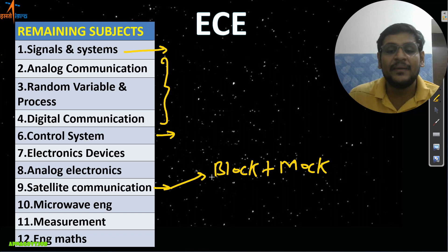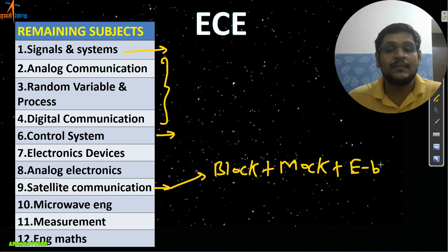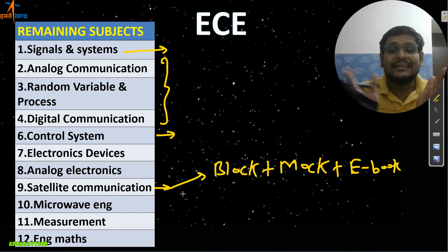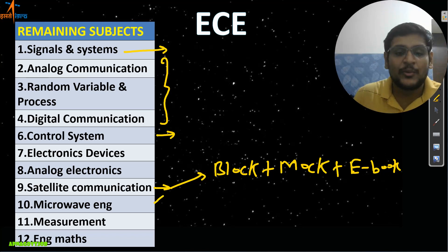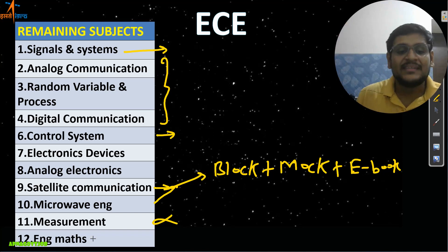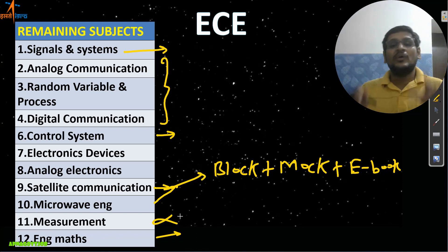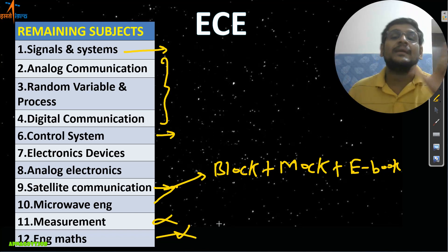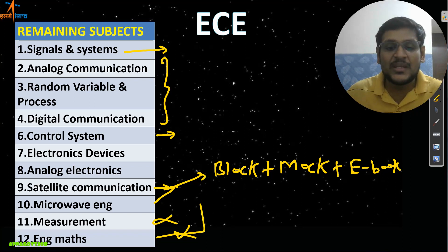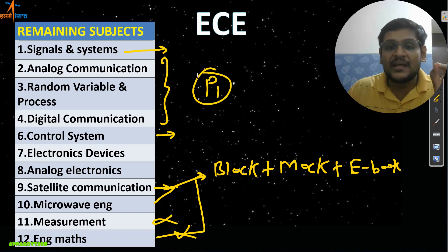For Satcom — if you have your B.Tech books you can use them, or use this shortcut: whatever questions I add in your blog plus mock tests, only do those concepts, and combine that with the basic concepts in your quick revision eBook about Satcom. No need to refer to full notes or full subject coverage since time is less. Same approach for Microwave. Skip Measurement completely. For Engineering Mathematics — if you are comfortable with matrices and calculus from B.Tech, go ahead; otherwise you can skip it.